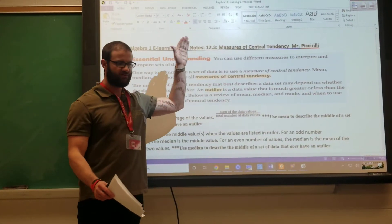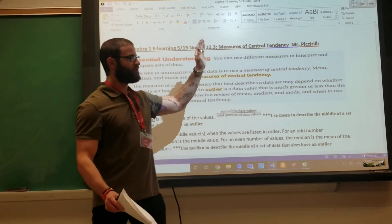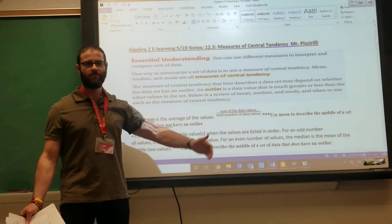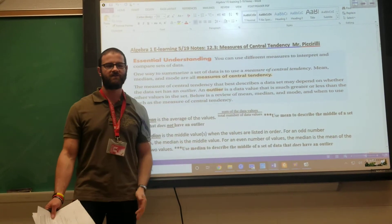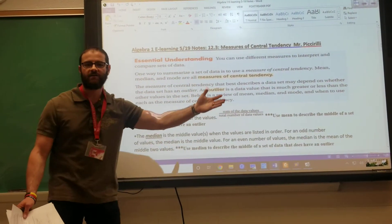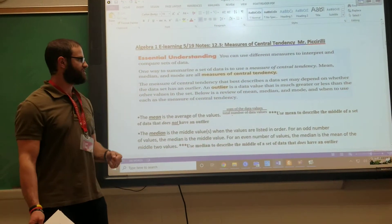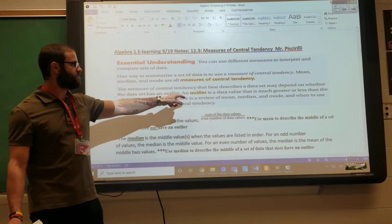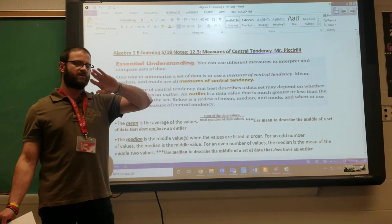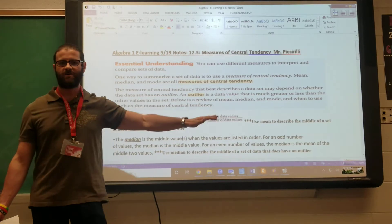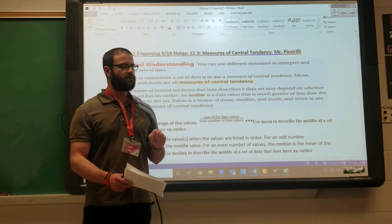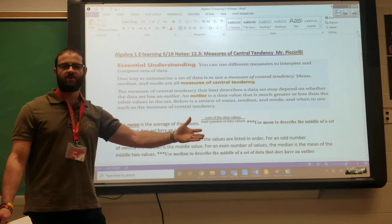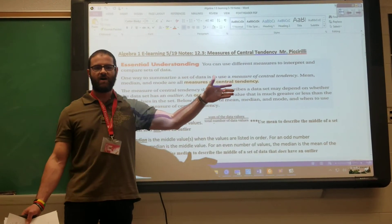So again, measures of central tendency — we're referring to mean, median, and mode, and we'll talk about each of those specifically in more detail. In a set of data, another key term is what we call an outlier — just think of that as a number that's either much greater or much less than any other number in the data set. That'll affect which measure of central tendency — mean, median, or mode — we can use to most effectively describe the data.